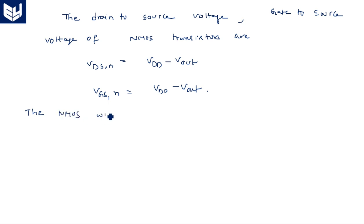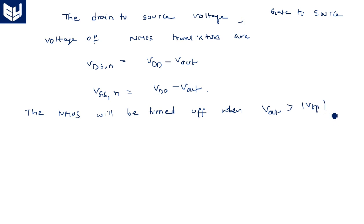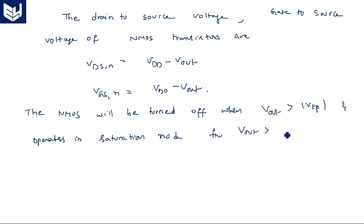The NMOS transistor will be turned off when V-out is greater than VTN. It operates in saturation mode for V-out greater than VTP. So until that particular condition is met, the NMOS transistor is said to be in saturation.